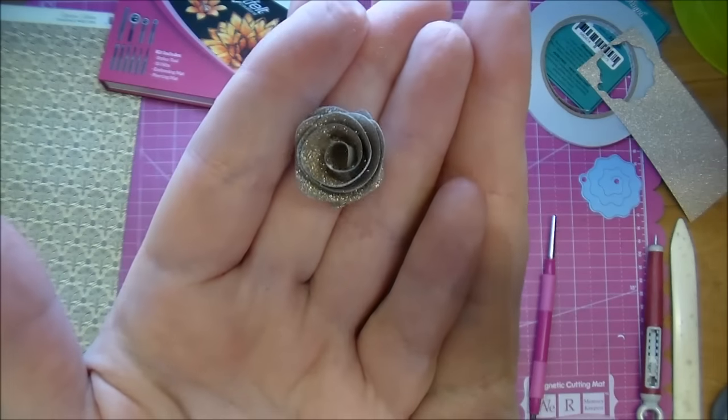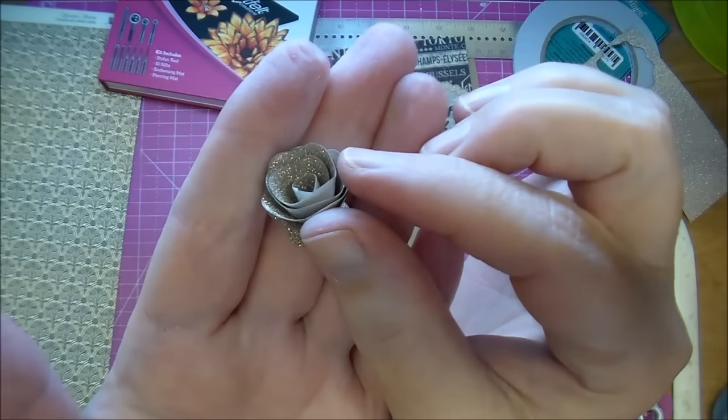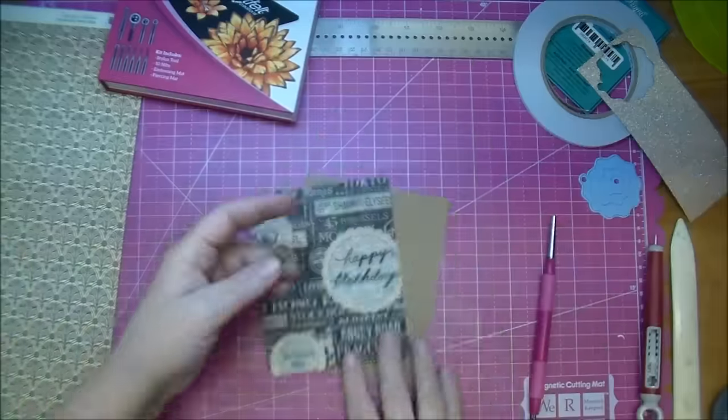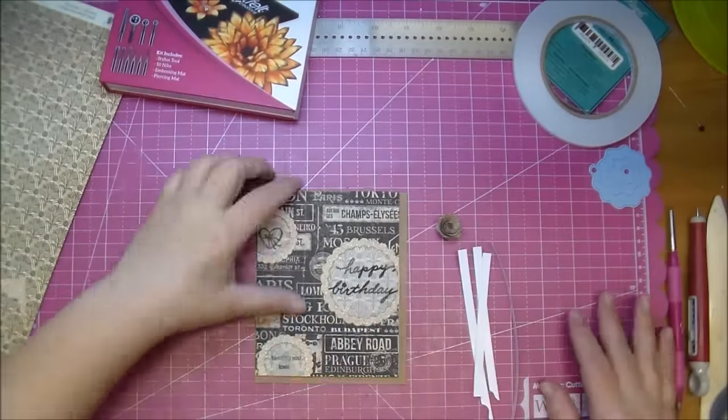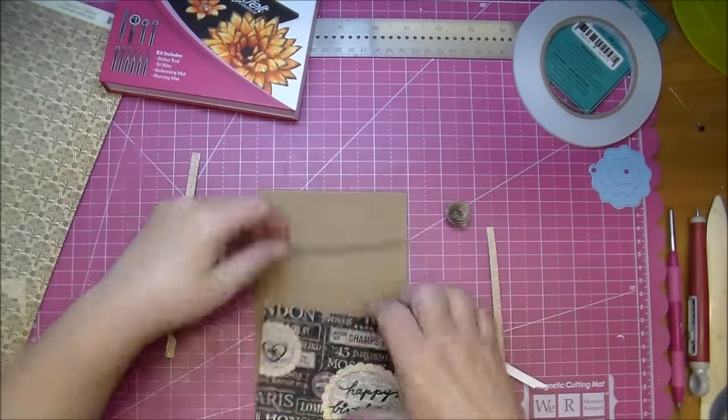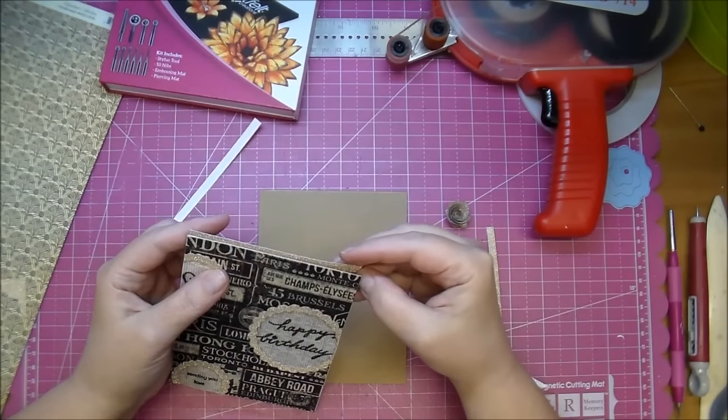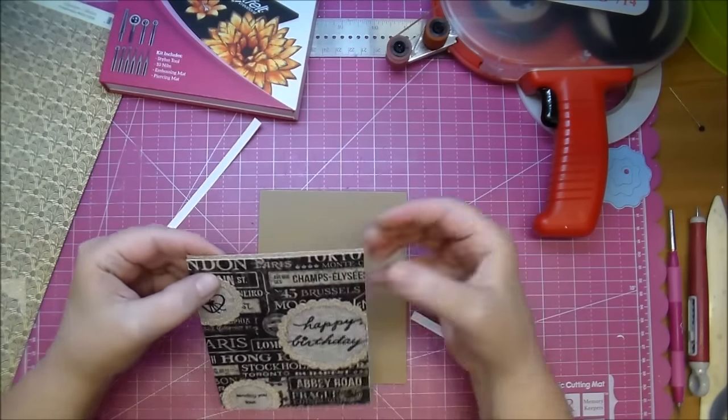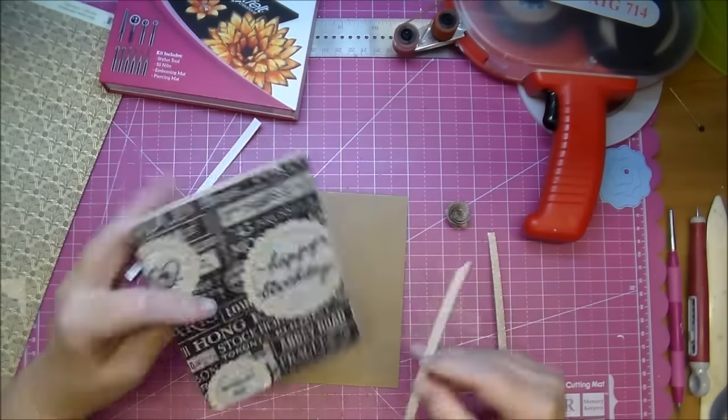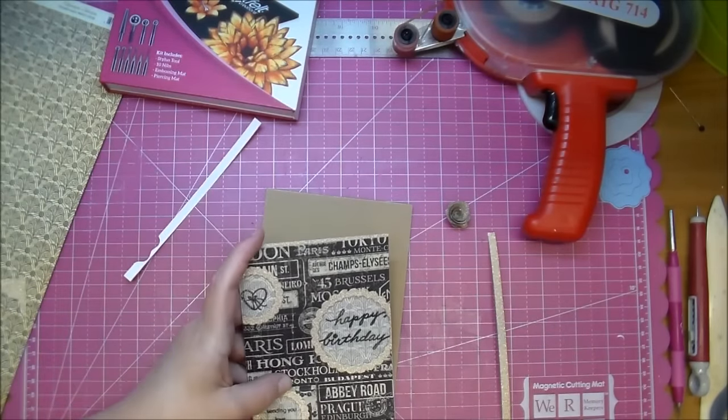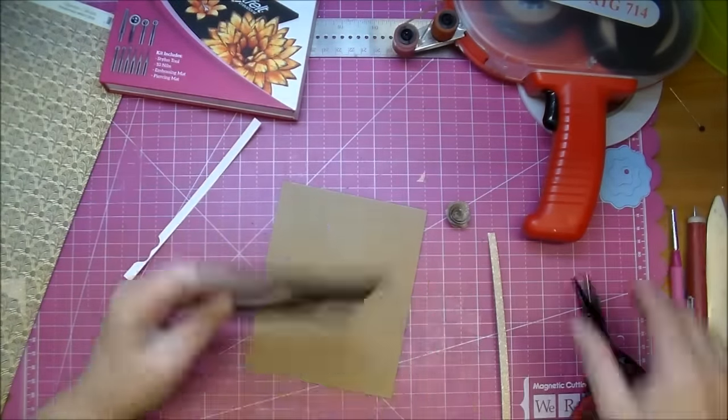So I make another one off camera as well, and you can make them a little bit larger. The die set comes with a larger rolled rose, but for this project, I just use the smaller one. It also comes with two leaves as well. I'll make sure to have a link in the description box and Cut It Home's blog for that die along with all the other products that I used.